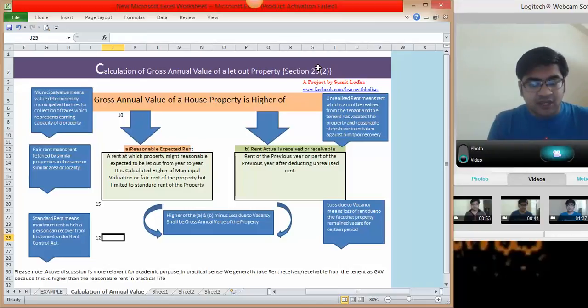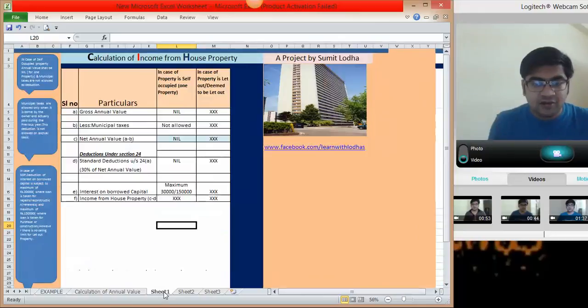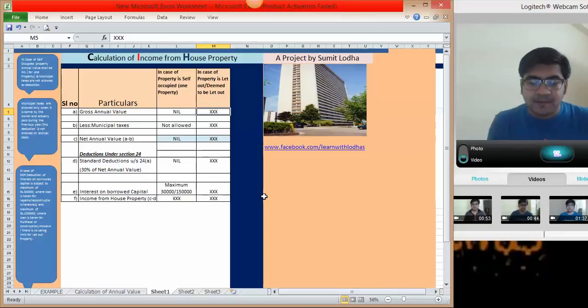And then if you have some loss due to vacancy, the property was vacant for a certain period in a year, then the loss of rent due to that vacancy will be deducted from higher of these two amounts. So once you will do that you will arrive at your gross annual value. And once you have the gross annual value then you can easily find out all the other things and calculate the income from the house property.